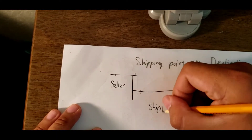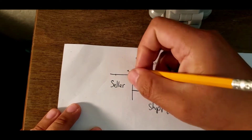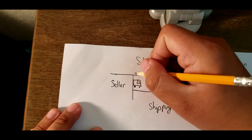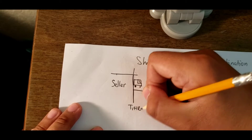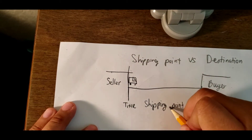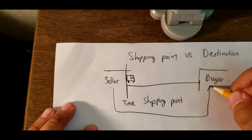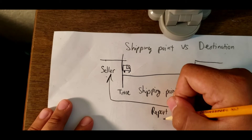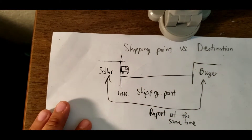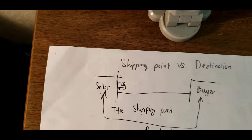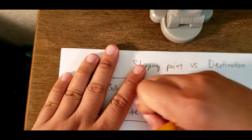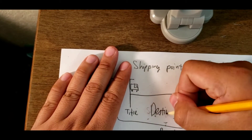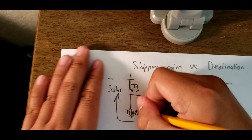About shipping point: the truck is over there, but they pass the title here. So if they use shipping point, the seller and buyer will report at the same time together. That's about the shipping point.